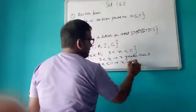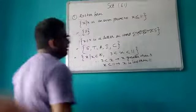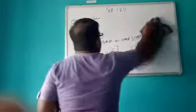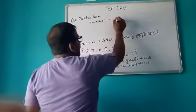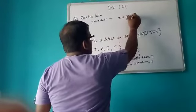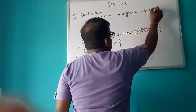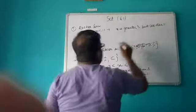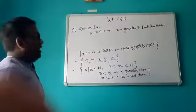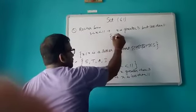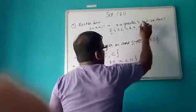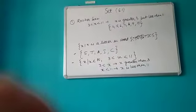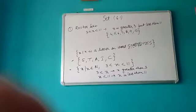Combining both conditions means x is greater than 3 but less than 11. So all natural numbers greater than 3 and less than 11 are: 4, 5, 6, 7, 8, 9, and 10. We stop at 10 because x must be strictly less than 11.